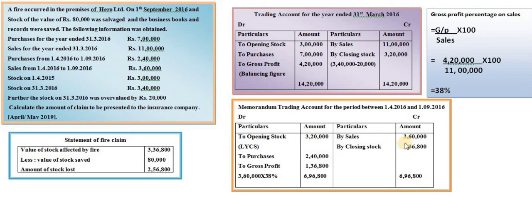From total debit items of 6 lakh 96,800, deduct sales of 3 lakh 60,000. The balance — that is the estimated closing stock — is 3 lakh 36,800. From 3 lakh 36,800, deduct the salvage value of 80,000. The amount of stock loss is 2 lakh 56,800. This is the amount of claim to be presented to the insurance company.